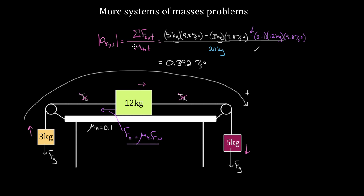When you apply this, be careful about signs. The acceleration of the five kilogram mass would be negative 0.392 m/s² because it's accelerating downward. The 12 kilogram mass has positive 0.392 m/s² because it's accelerating to the right, and rightward is typically positive. The three kilogram mass also has positive 0.392 m/s² because it's accelerating upward.